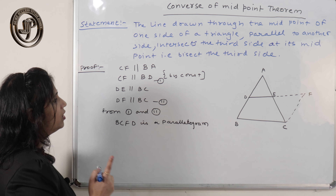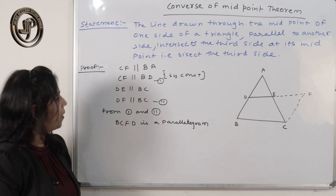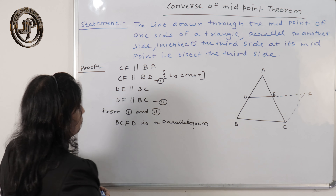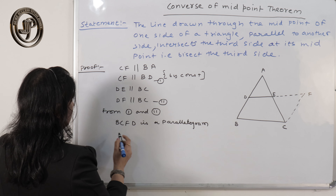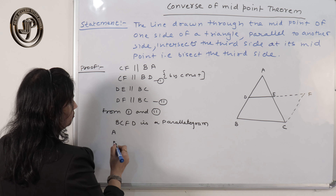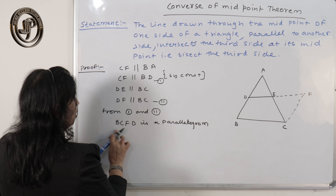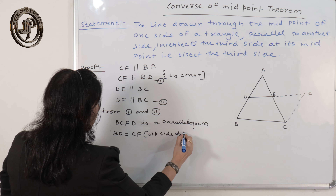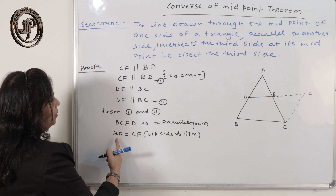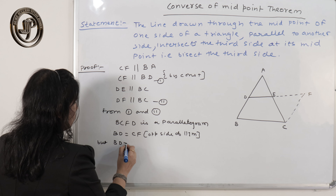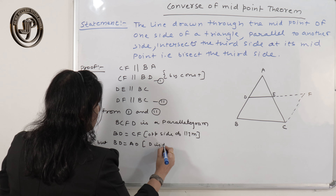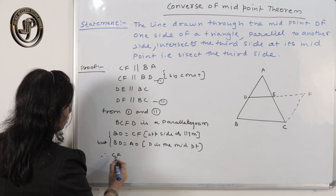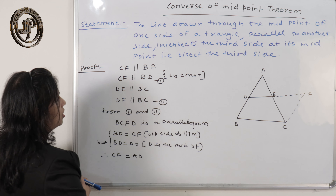Since BCFD is a parallelogram, opposite sides are parallel and equal. Therefore BD equals CF — reason: opposite sides of parallelogram. And BD equals AD because D is the midpoint — that was given. So from both equations, CF equals AD.